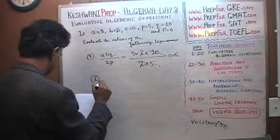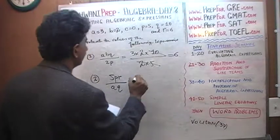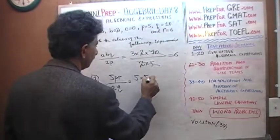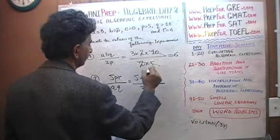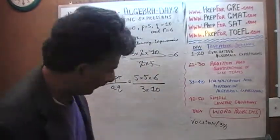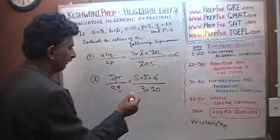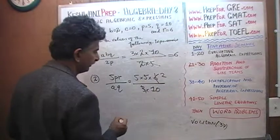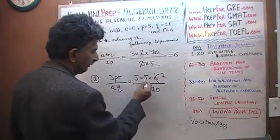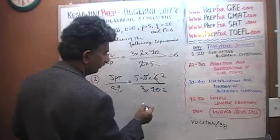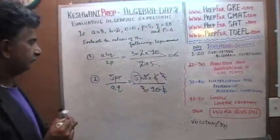Number 2. 5 times P times R over A times Q. 5 times P which is 5 times R which is 6 over A is 3 times Q which is 10. Do you see any common factors in the top and the bottom? I see a 6 here. 6 divided by 3 is 2 and that takes out this 3. We divide the top and the bottom by 5. That takes care of this 5 and this 10 becomes 2. This 2 can cancel out with this 2. The answer is 5.